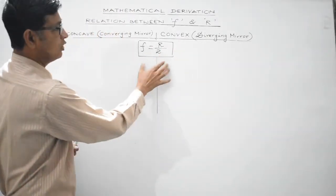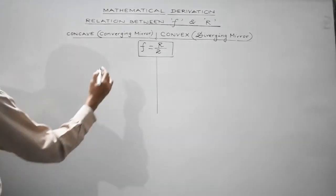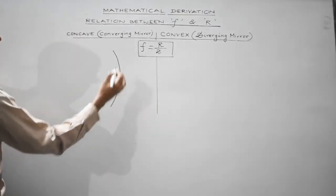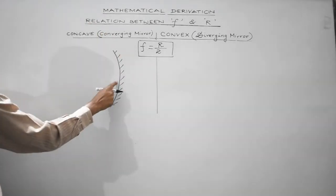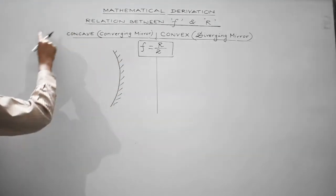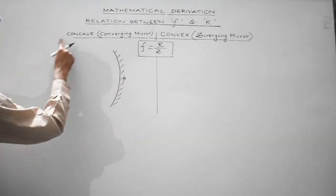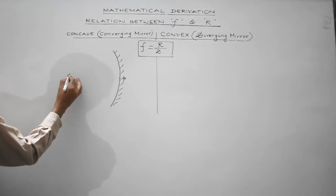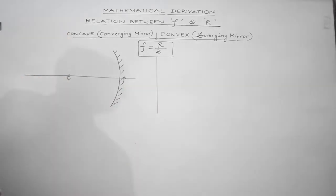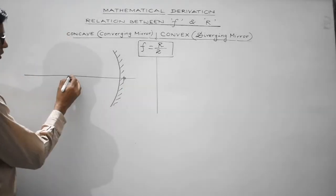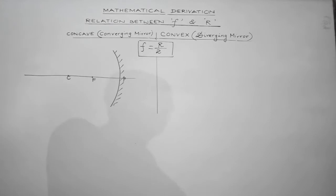Let's verify this formula first for a concave mirror. This is a concave mirror — it's a small part of a hollow sphere whose reflective surface is towards the center of that hollow sphere. This is the pole P, and the center of curvature C is somewhere here. The line joining P and C is the principal axis. The midpoint we are going to prove is the principal focus F.